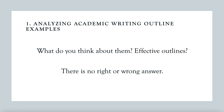Let's start by analyzing some academic writing outline examples. We want you to take a moment to look at the following examples and think about them critically. What do you think about these outlines? Do they seem effective to you? Remember, there is no right or wrong answer here. Outlines can take different forms depending on the writer's approach, the topic, and the specific requirements of the paper. What's important is to identify the strengths and weaknesses of each example, so we can understand what makes an outline truly effective.